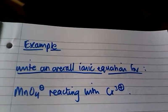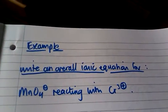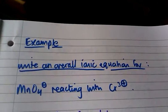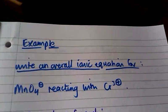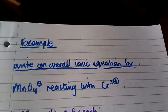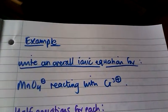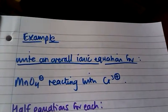what we need to do first is write half equations for each. So we need a half equation for the reduction of permanganate and a half equation for the oxidation of chromium 3.